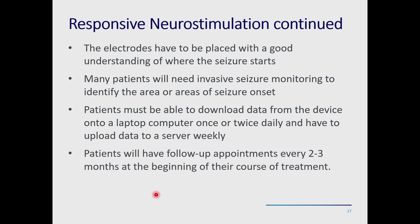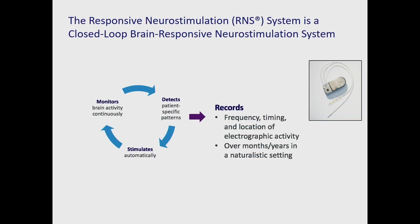RNS patients download data from their device onto a laptop typically once a day and send information to their doctor about once a week. Follow-up appointments occur every two to three months at the start of treatment. The electrodes continuously monitor the brain, seeking the specific seizure patterns they've been programmed to detect, then automatically stimulate to try to abort the seizure. It records the frequency, timing, and location of seizures over months and years in a natural setting.